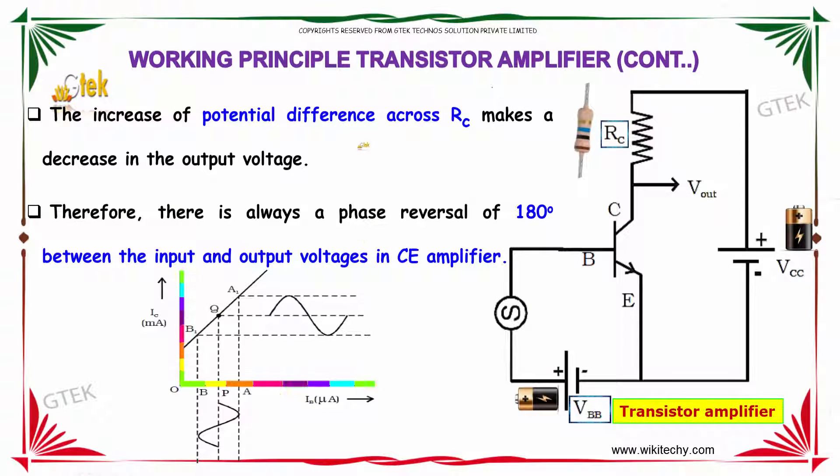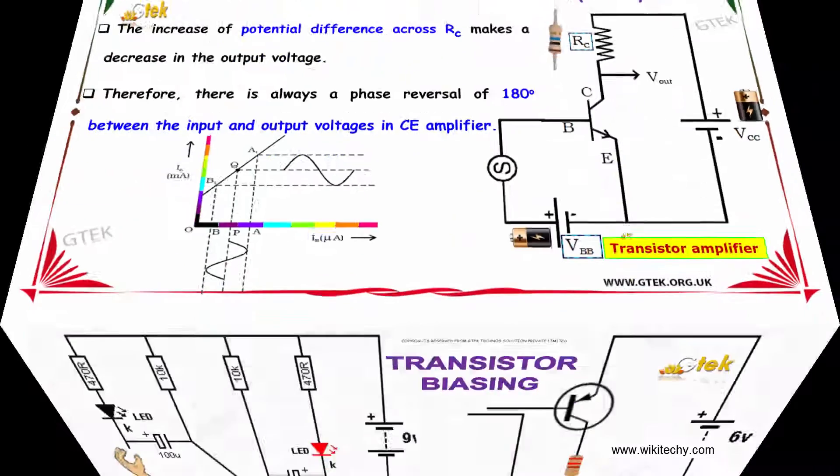The increase of potential difference across RC makes a decrease in the output voltage. Therefore, there is always a phase reversal of 180 degree between the input and output voltage in CE amplifier. This is how the transistor amplifier is working.